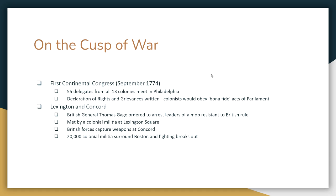The First Continental Congress meets in September of 1774, with 55 delegates from all 13 colonies meeting in Philadelphia. Many are radicals, but there are some conservative leaders. The Congress meets in the middle — rejecting both radical and conservative proposals — and settles on something known as the Declaration of Rights and Grievances. Congress says they will obey bona fide acts of Parliament, meaning acts where they have some say. The problem is what would constitute a bona fide act — whether colonists get to vote, give input, or be represented — was never really decided.